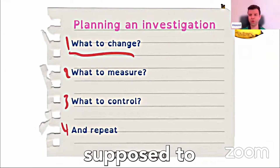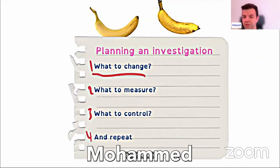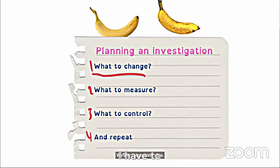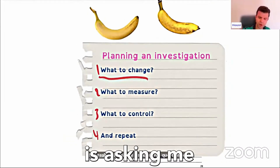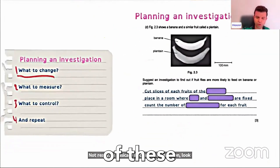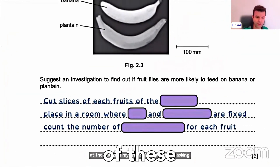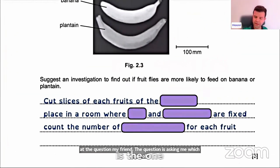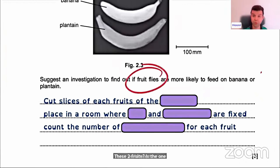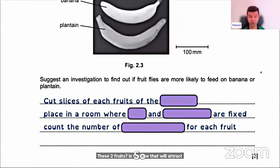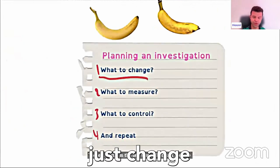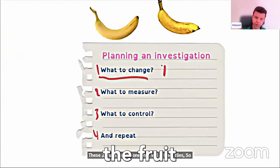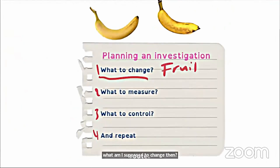Can you tell us what you're supposed to change here, Hamad? The question is asking me which one of these two fruits will attract flies, will attract insects. So what am I supposed to change? I will just change the type of fruit.